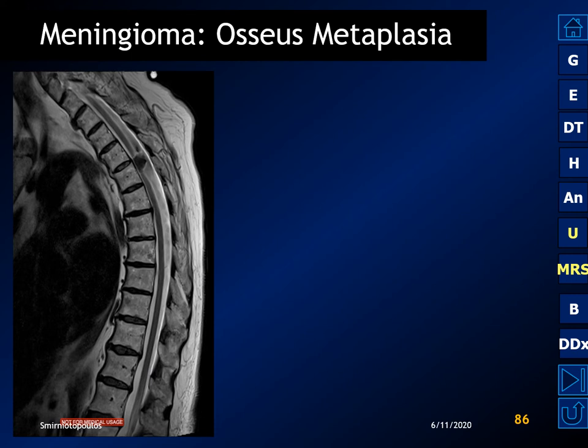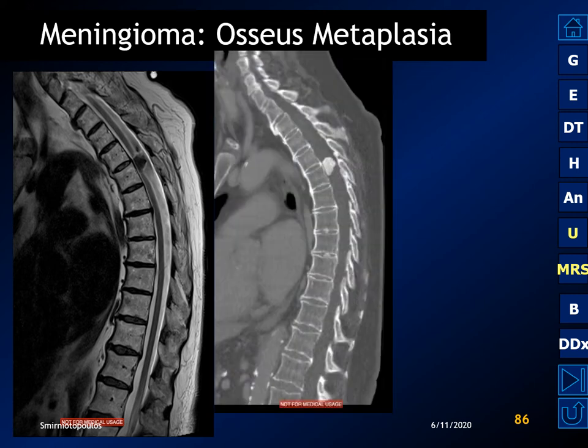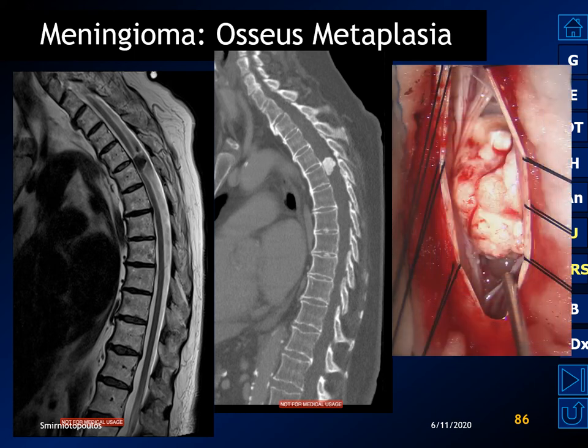Here is a patient with a spinal cord meningioma. We can see dramatic hypointensity on the sagittal T2-weighted MR and remarkable hyperattenuation on CT reformation. This is not due to psammomatous calcification but rather to osseous metaplasia with the formation of a mineralizing osteoid matrix.